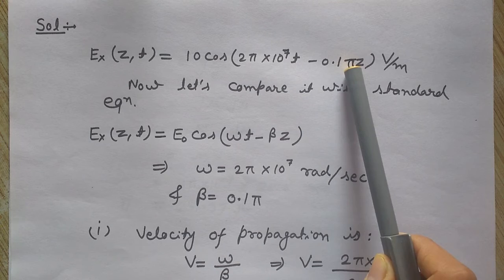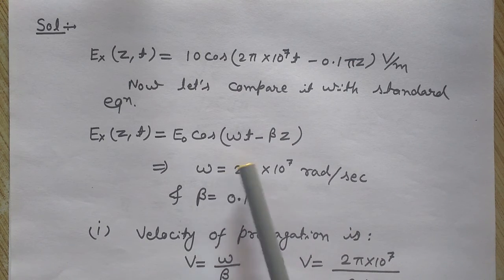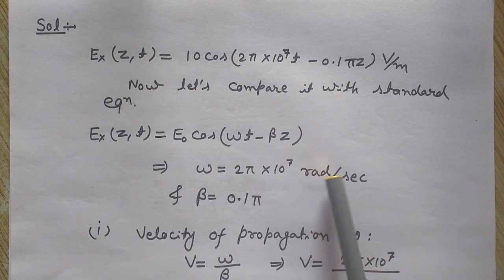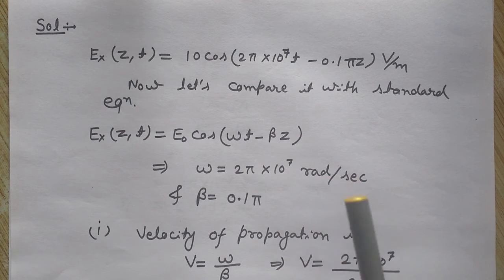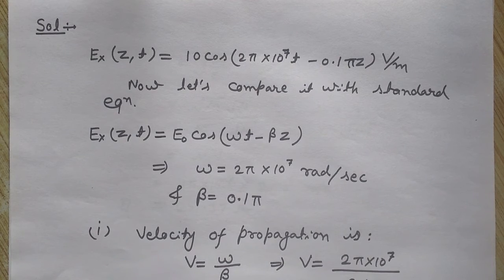Just before z, it is 0.1π, so this is β. By comparing, ω = 2π × 10^7 rad/sec, and β = 0.1π.